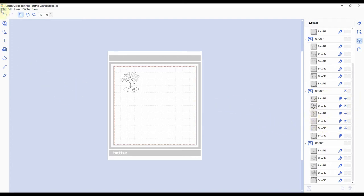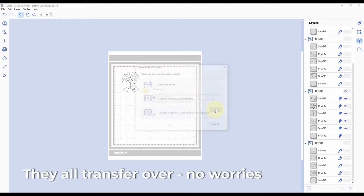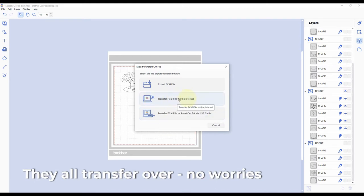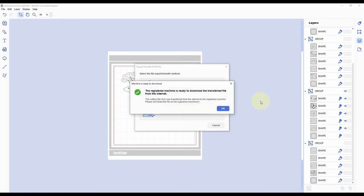I'm going to go to the upper left and go File, Export/Transfer FCM File. It's going to give me this warning that objects that have been set as hidden are not available to export or transfer. That is perfectly fine. It also says tiny objects are automatically removed when converting to FCM because they are too small to cut. I'm going to hit okay and I am going to transfer via the internet wirelessly. The export FCM file with the file folder means you could put it on a thumb drive. This one would be if you have your computer hooked up to the Scan and Cut via USB cable.